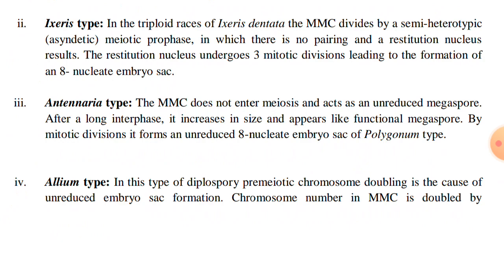The third type is the Antennaria type. The megaspore mother cell does not enter meiosis and acts as an unreduced megaspore. After a long interphase, it increases in size and appears like a functional megaspore. By mitotic divisions, it forms an unreduced 8-nucleate embryo sac of the Polygonum type.